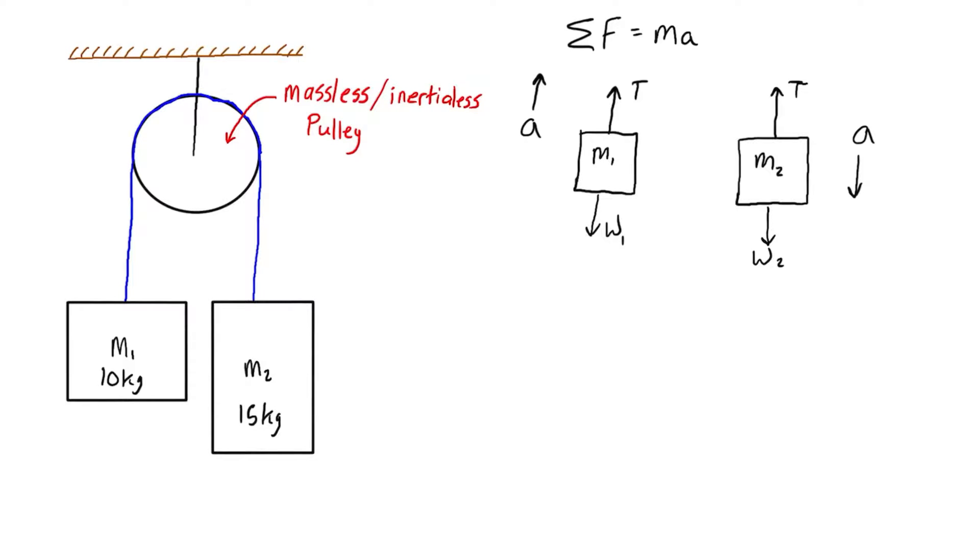One unknown (T and a) will drop out along the way and we'll come back and solve it after. We know mass 1 is 10 kilograms and mass 2 is 15 kilograms.